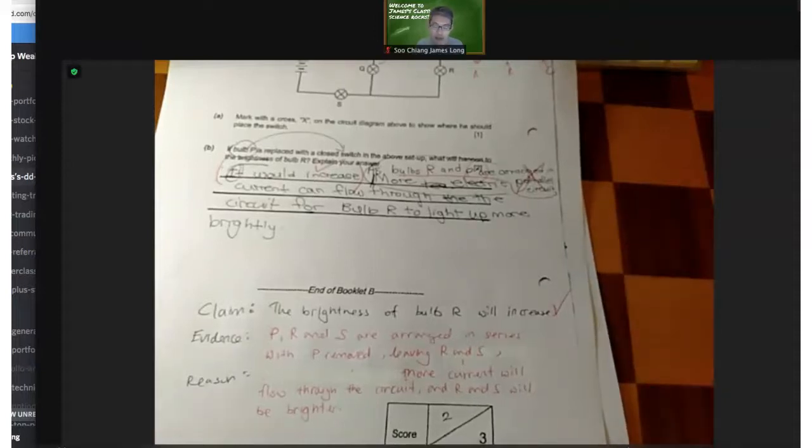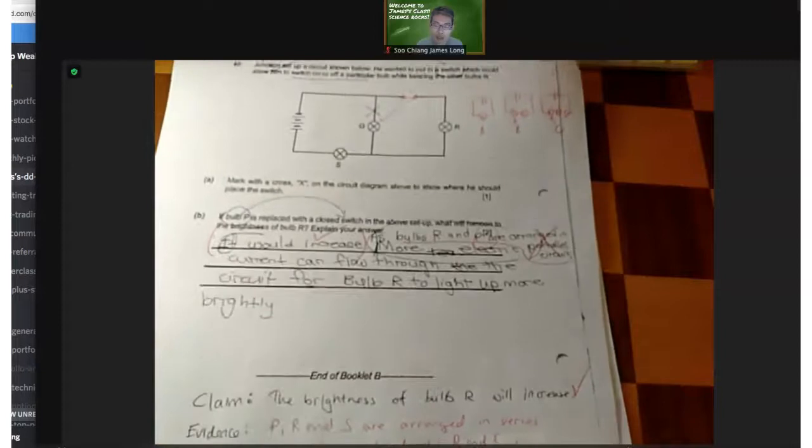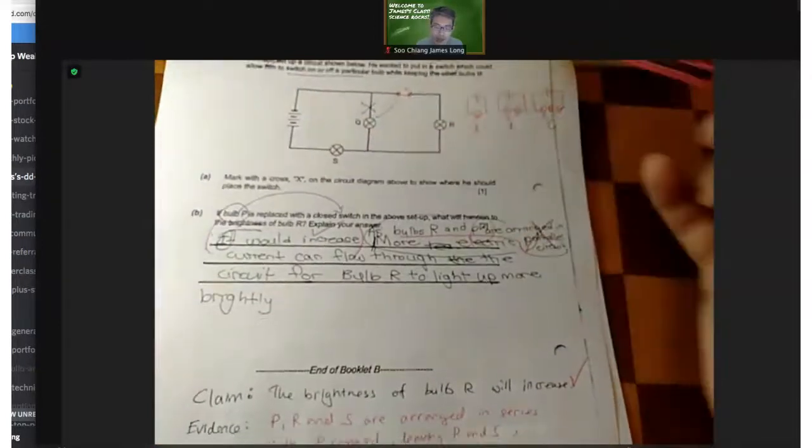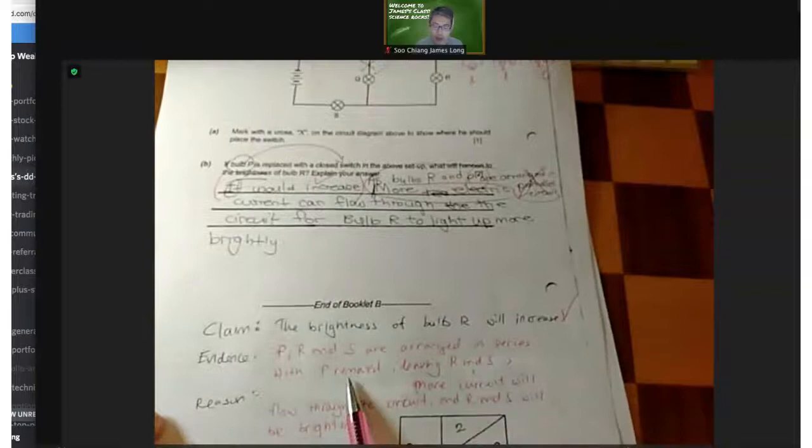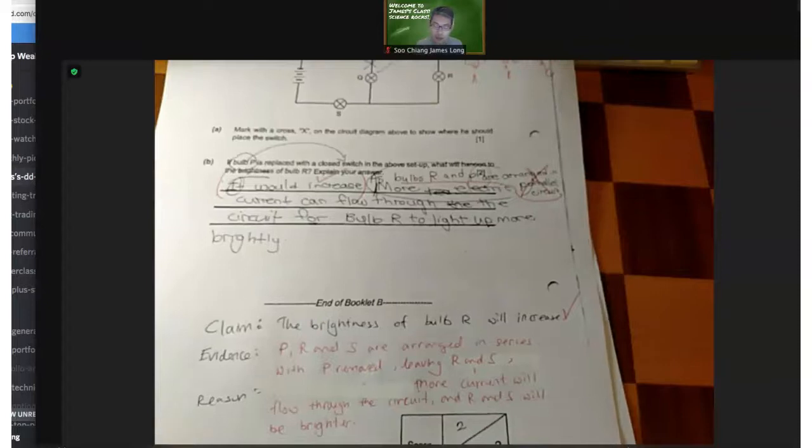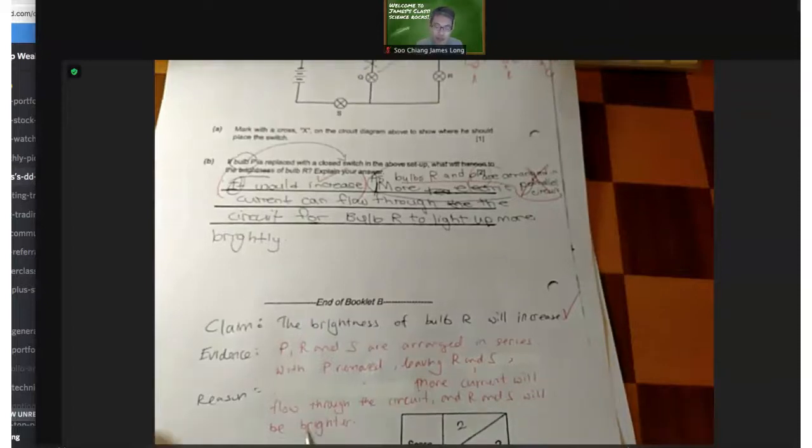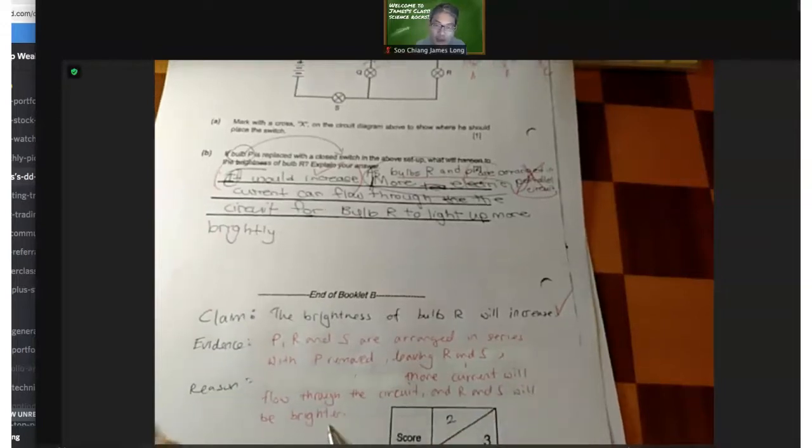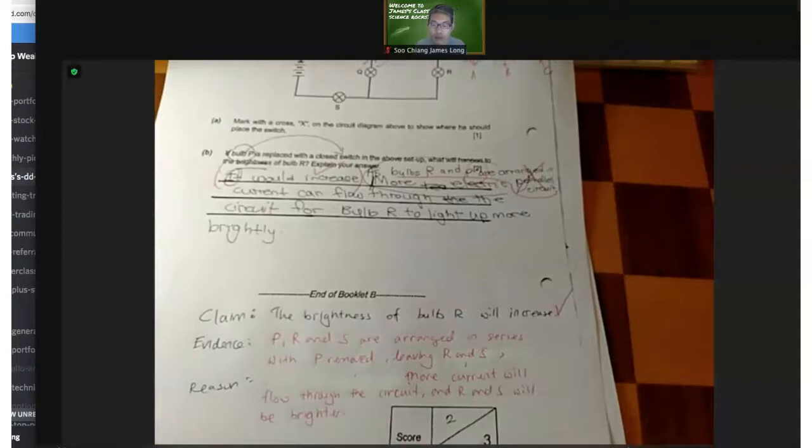The more bulbs that are in series arrangement, the less bright it will be. So now you're asked to explain, it's a two marks thing. Let's claim correctly what happened to the brightness: the brightness will increase. Now how do we get the marks? Let's talk about the evidence. We notice that there are three bulbs in series, and when we remove one of them leaving R and X in series, there's the first piece of evidence. Next, if there are only R and X left in series, it means more current will flow through the circuit and R and X will be brighter because there's more current flowing through each of the bulbs.